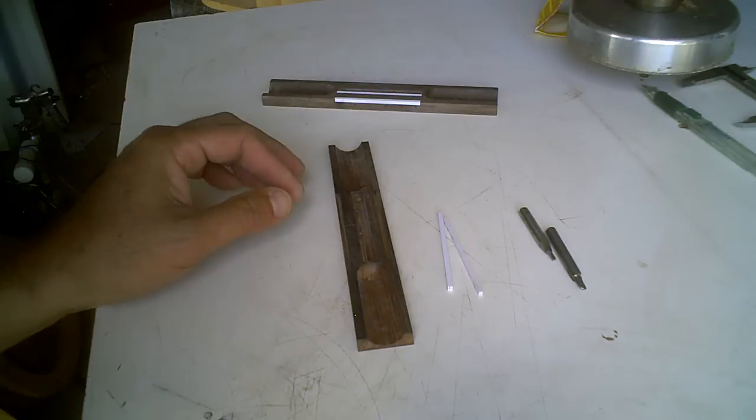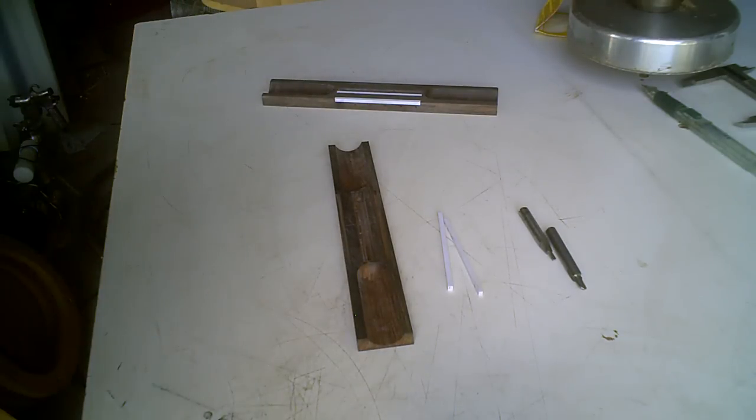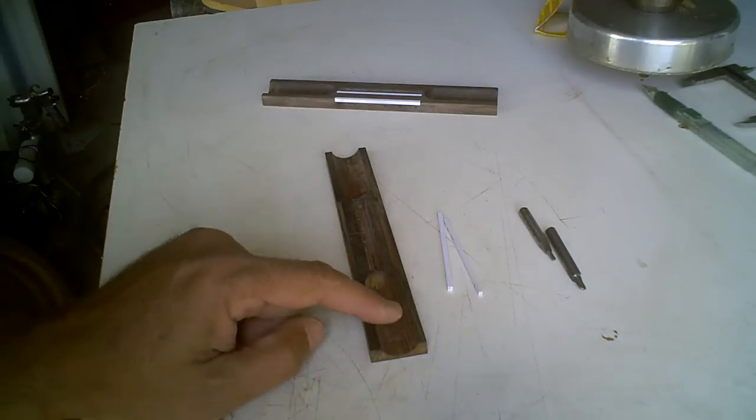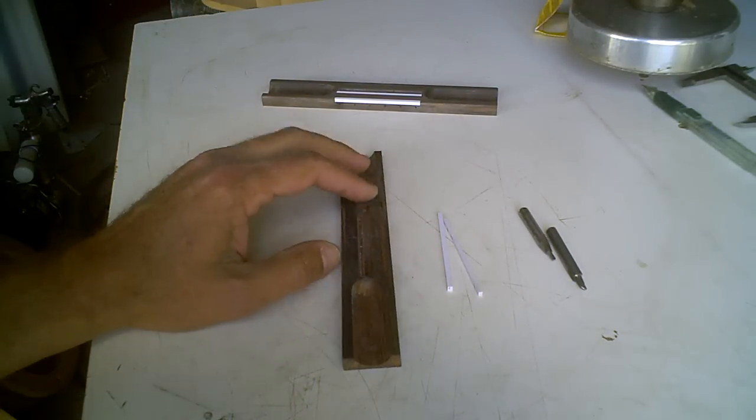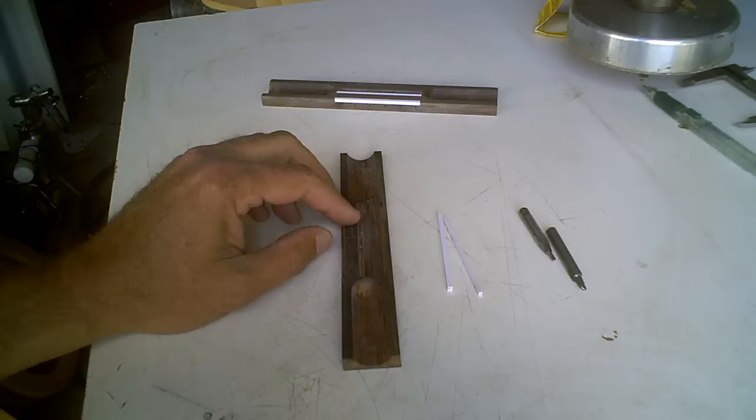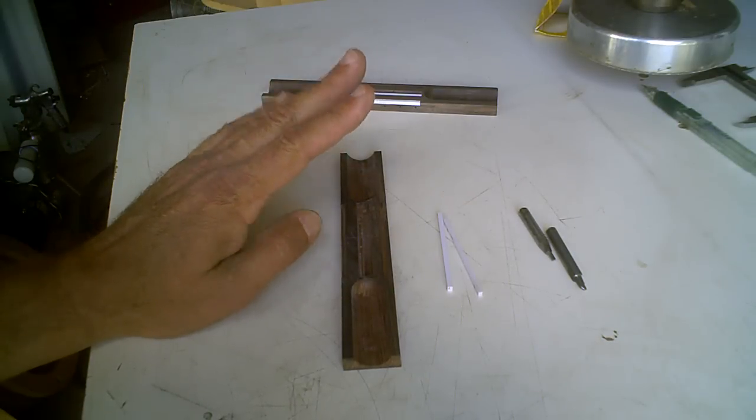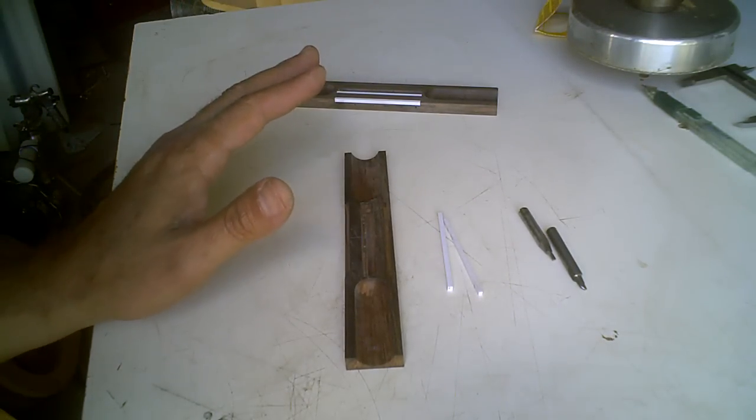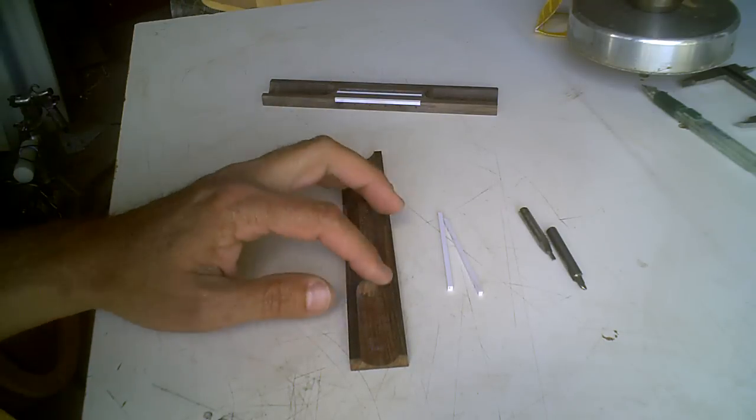Okay, this is part two of making a John Gilbert style bridge. This is my interpretation of it. Okay, we've already cut this groove here. These other, there's four other grooves that are made. And it's done the same way that you saw these made before.